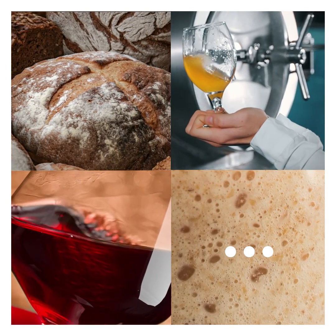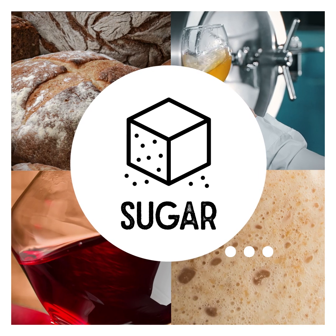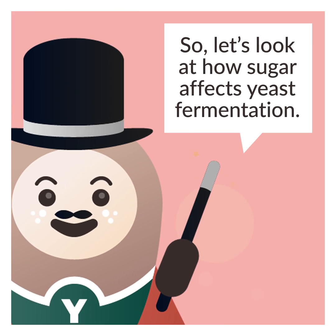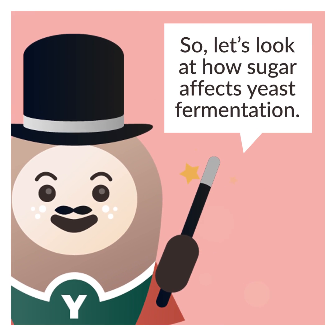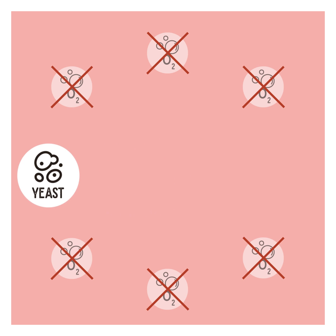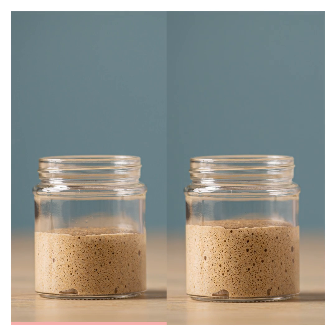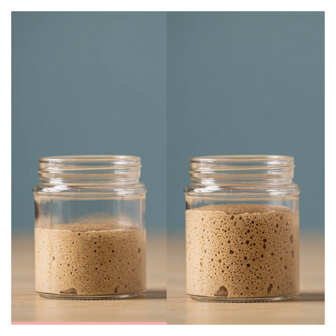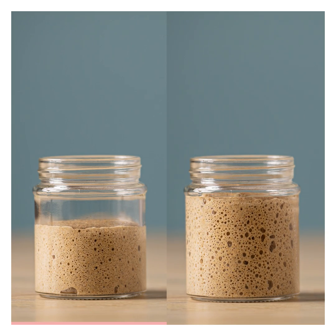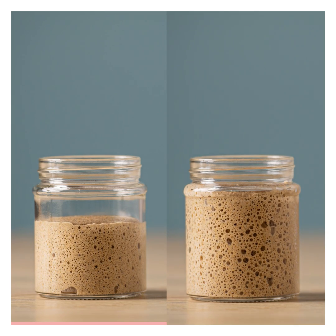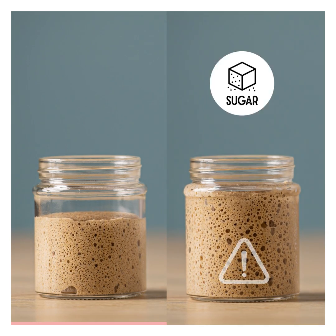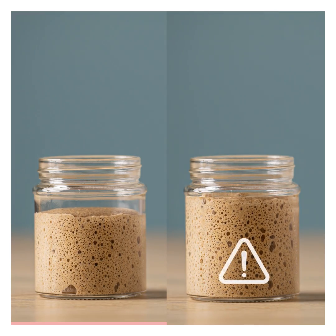A key component in yeast fermentation is sugar, so let's look at how sugar affects yeast fermentation. In the absence of oxygen, yeast undergoes fermentation and converts sugars into ethanol and carbon dioxide. By adding more sugar, you increase yeast's activity and can speed up the fermentation process. But be careful — too much sugar can also affect yeast metabolism.